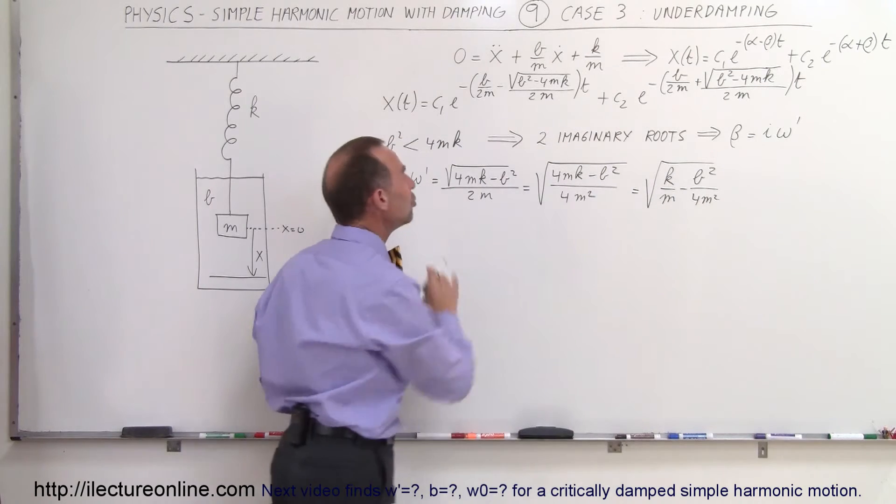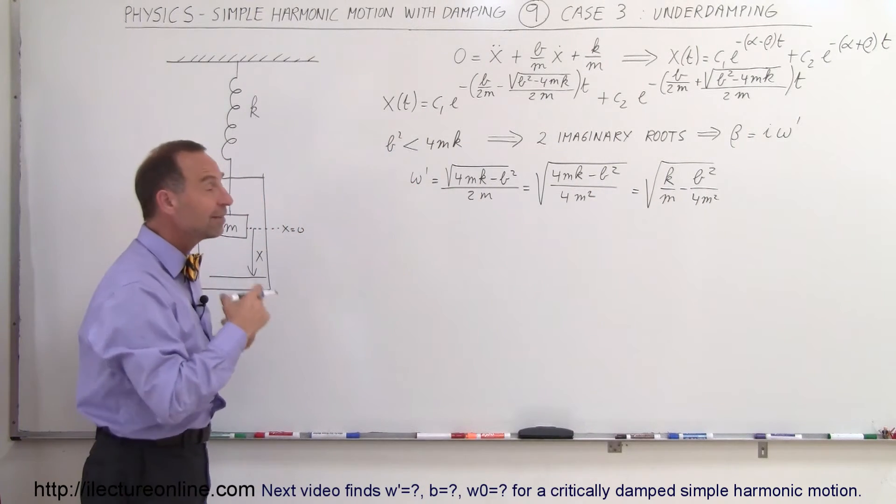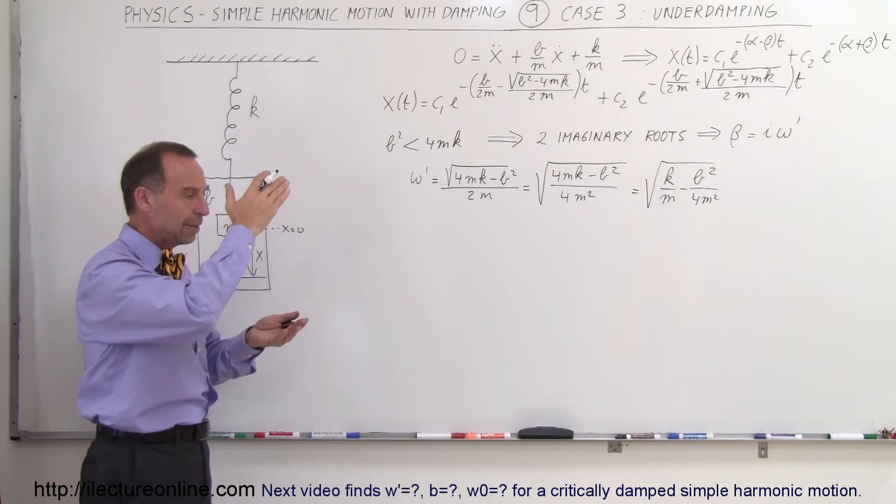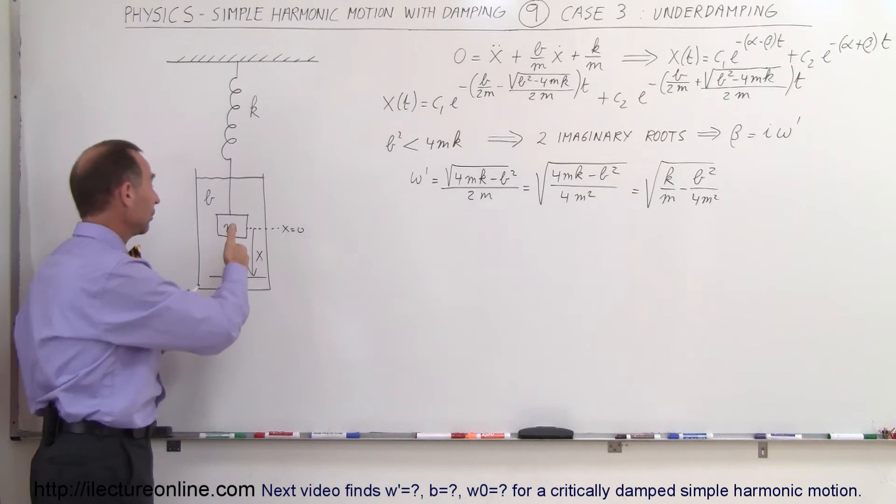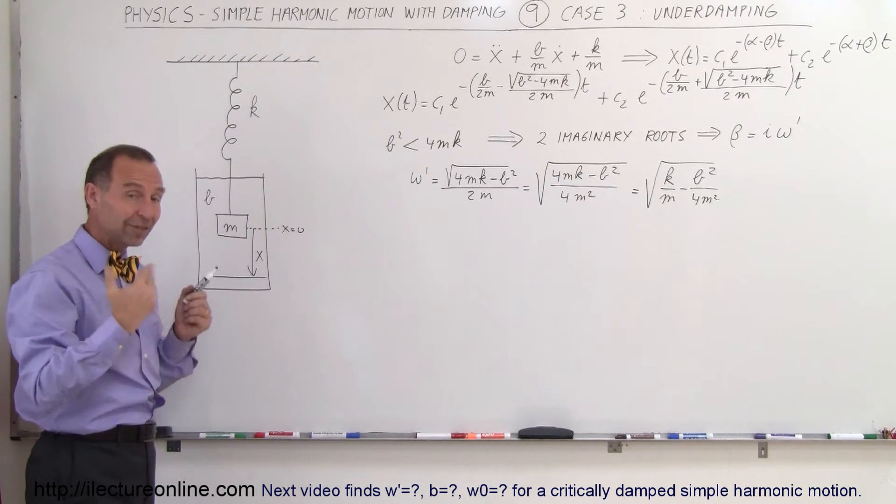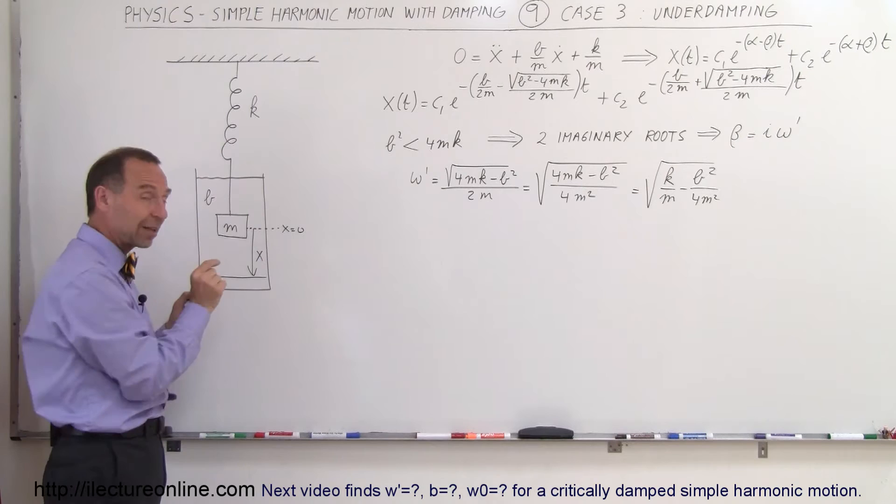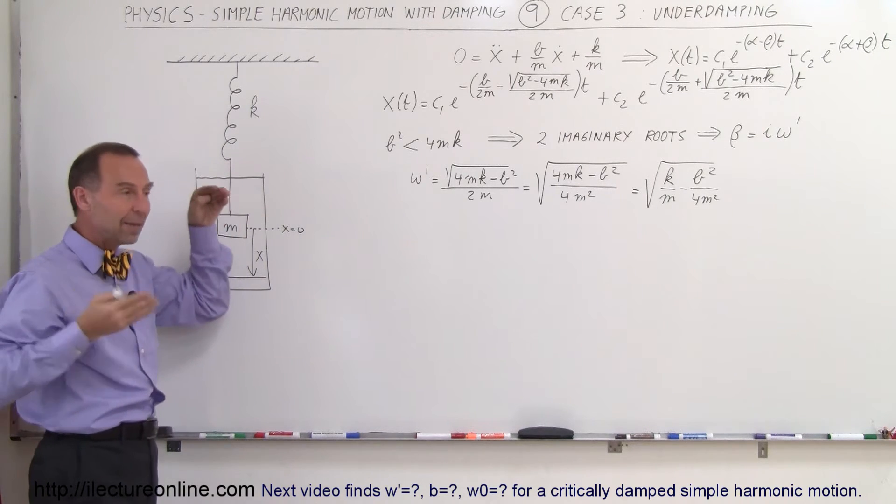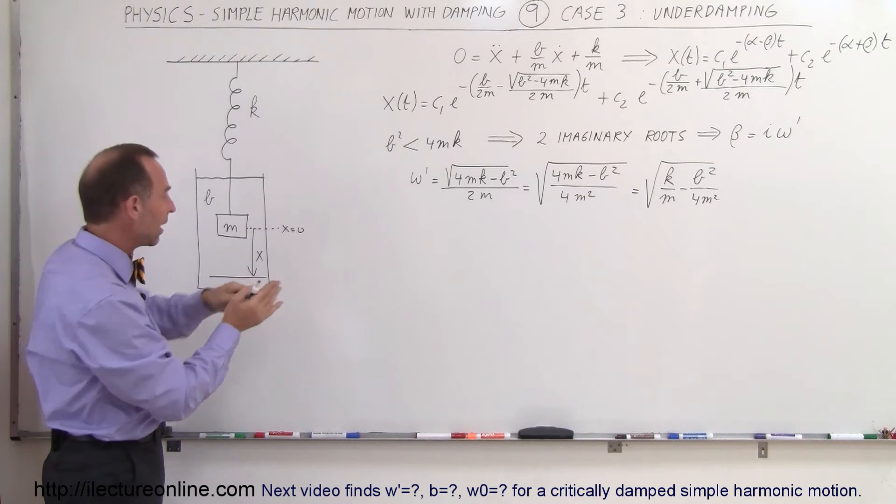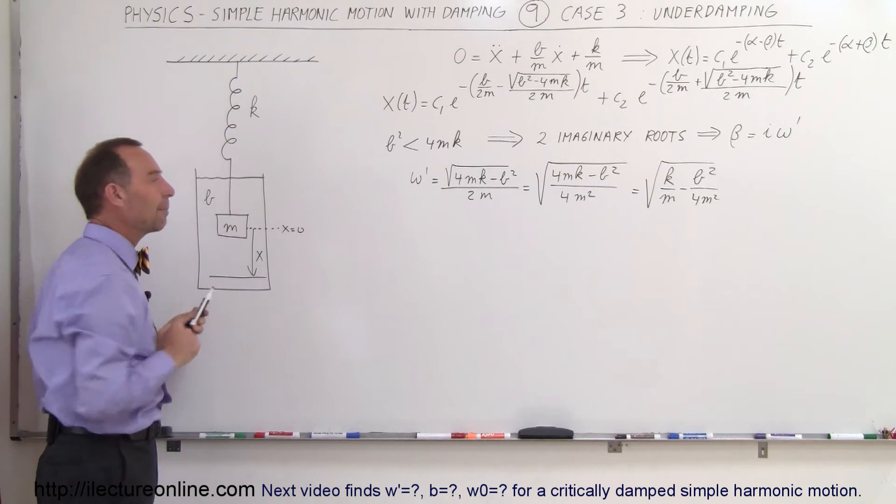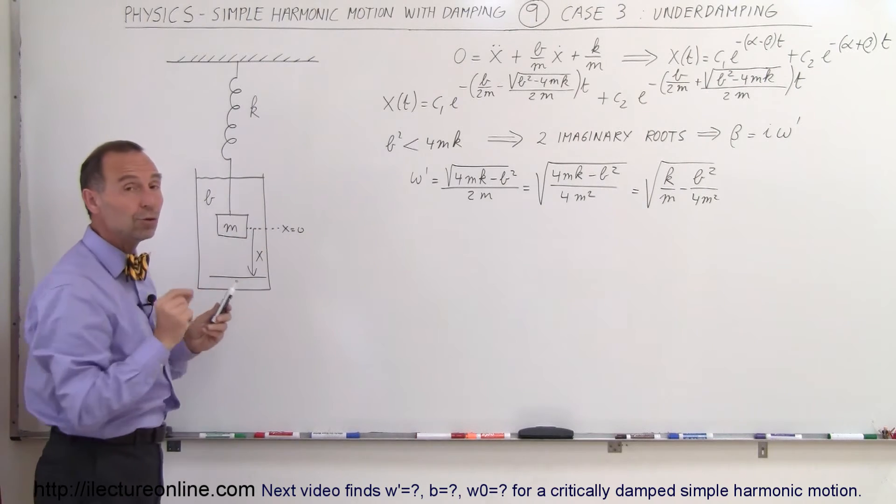And now that becomes the new frequency of the damped oscillatory motion. Even though it's going to be diminishing over time, what's going to happen here is we're going to displace the mass and it's going to start oscillating back and forth. It's still going to oscillate because the damping factor is small, so it's going to keep overshooting the equilibrium point. But over time the oscillation size will decline, so it's going to oscillate, oscillate, decline in amplitude, and then stop after time. But that's going to be the new frequency.